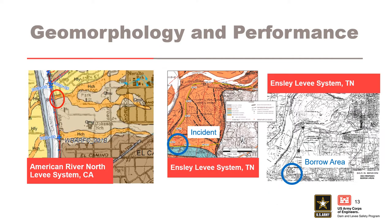Here are more examples of how river geomorphology relates to expected levee performance. On the left is an example from the American River North levee system, showing two historic channel deposits mapped perpendicular under the levee. Although there are no documented under-seepage performance issues in this reach, these areas were further evaluated for backward erosion piping under the full range of potential flood loading. The Ensley levee system on the right is located in point bar deposits, with a top stratum of varying clay silts, silts, and silty sands 5 to 25 feet thick, underlain by sands and gravel.